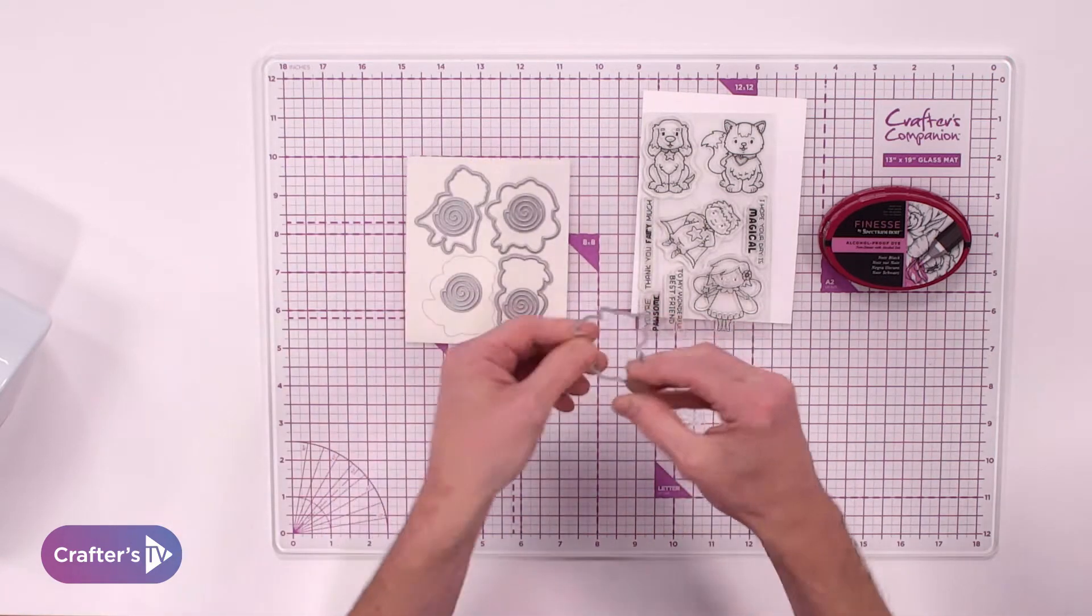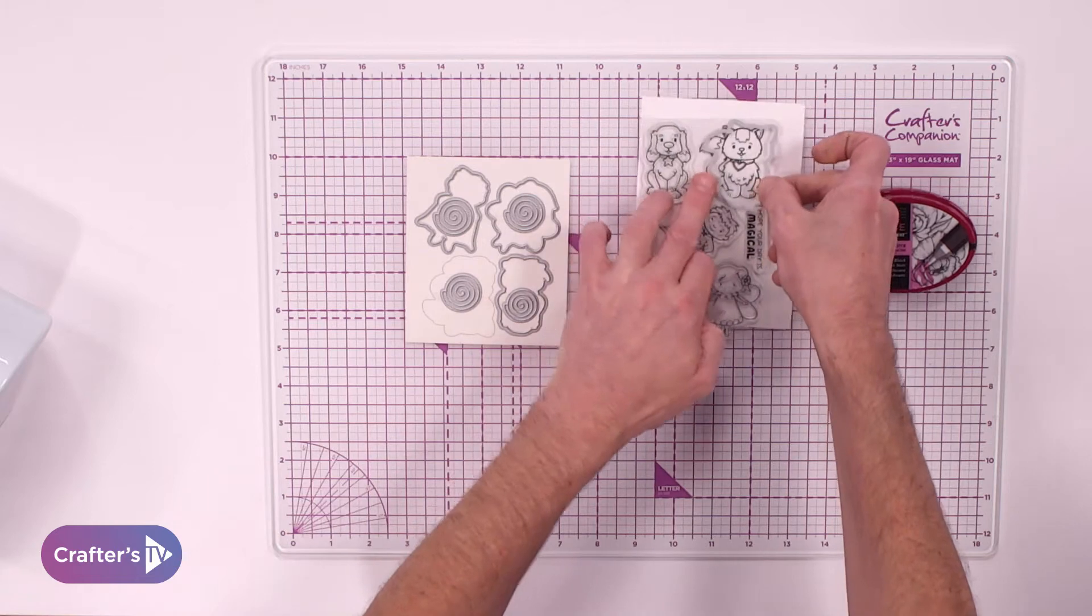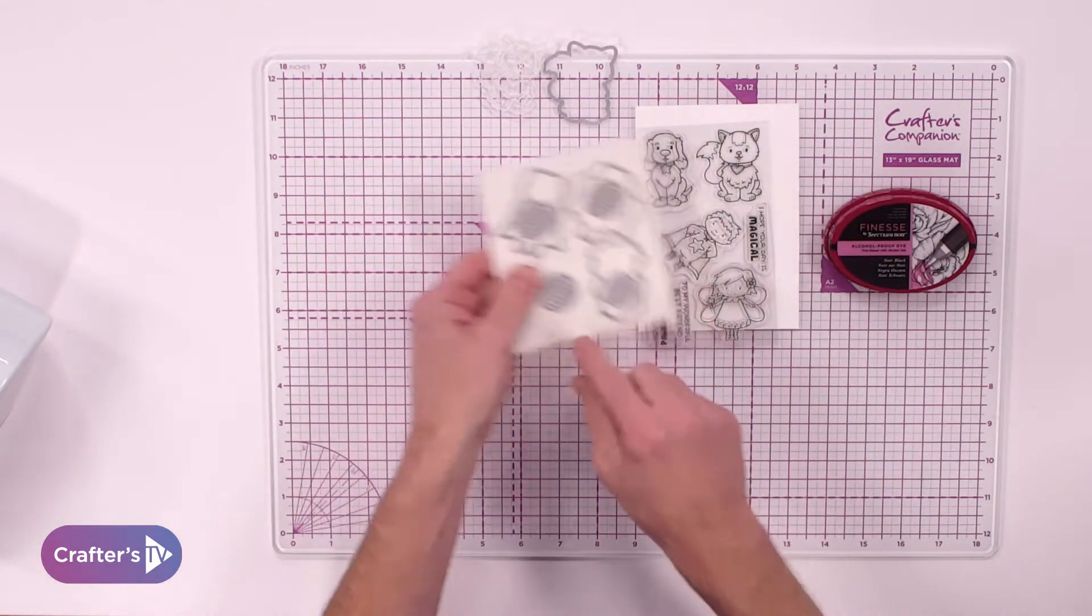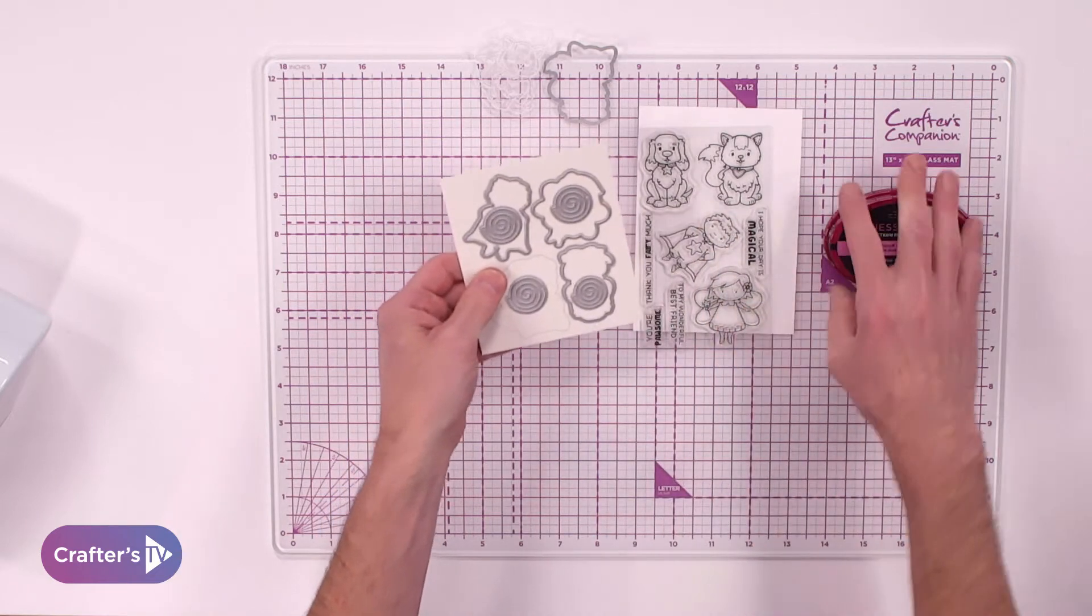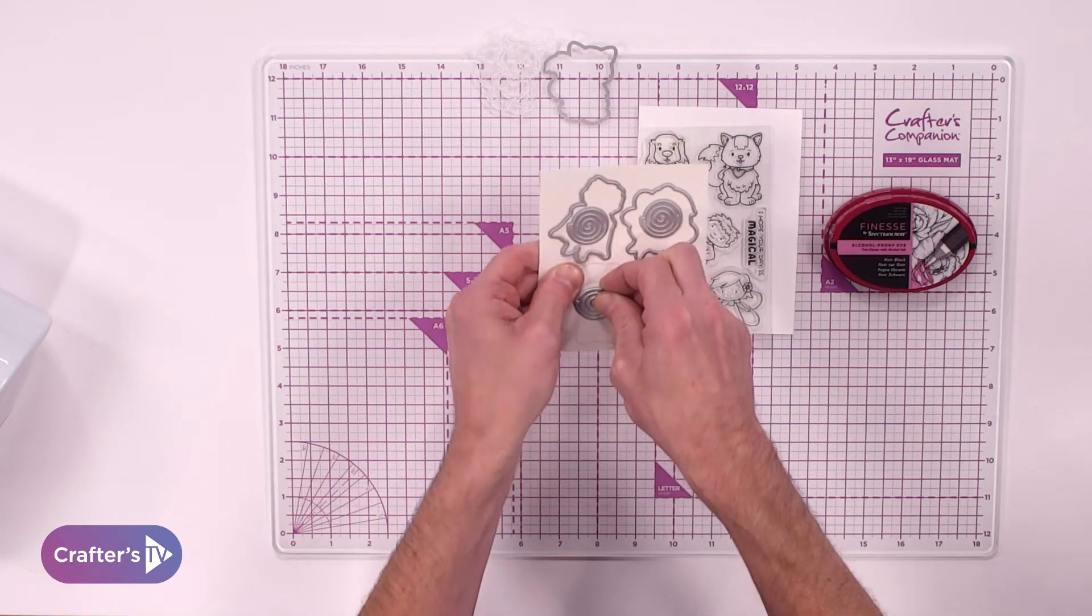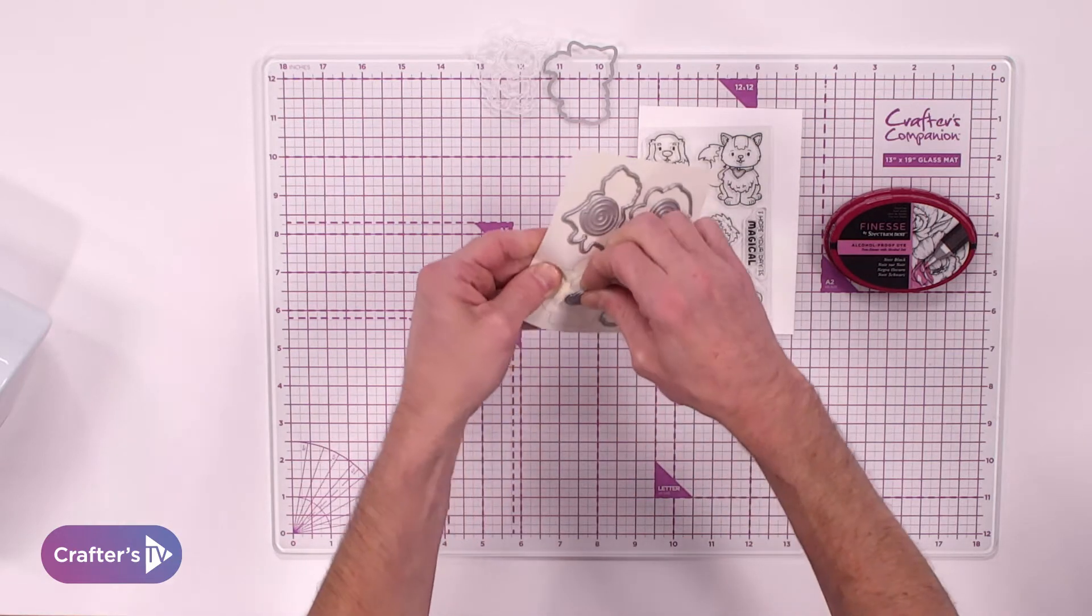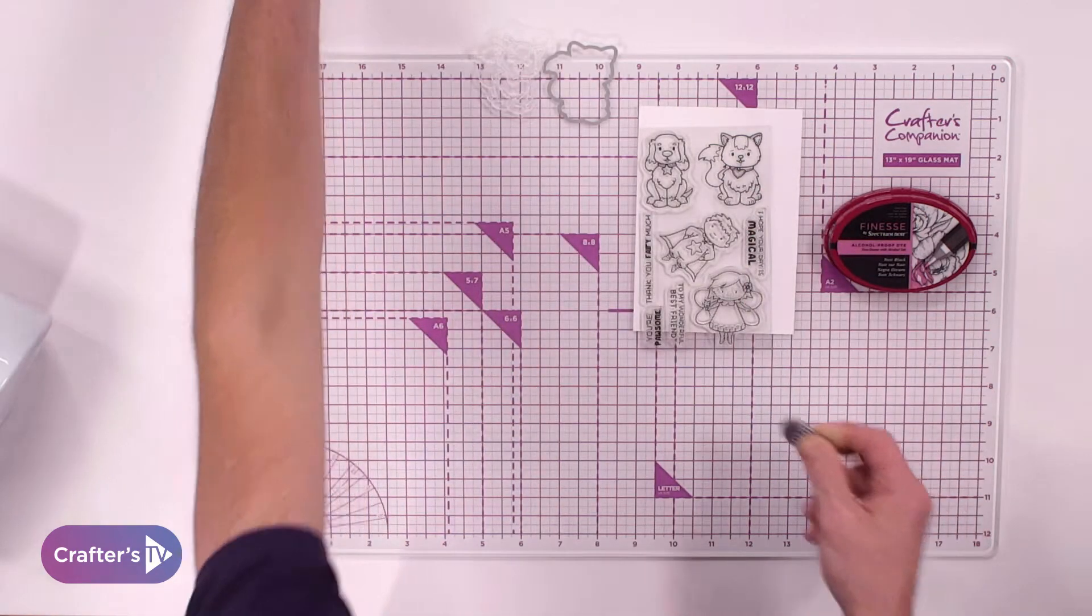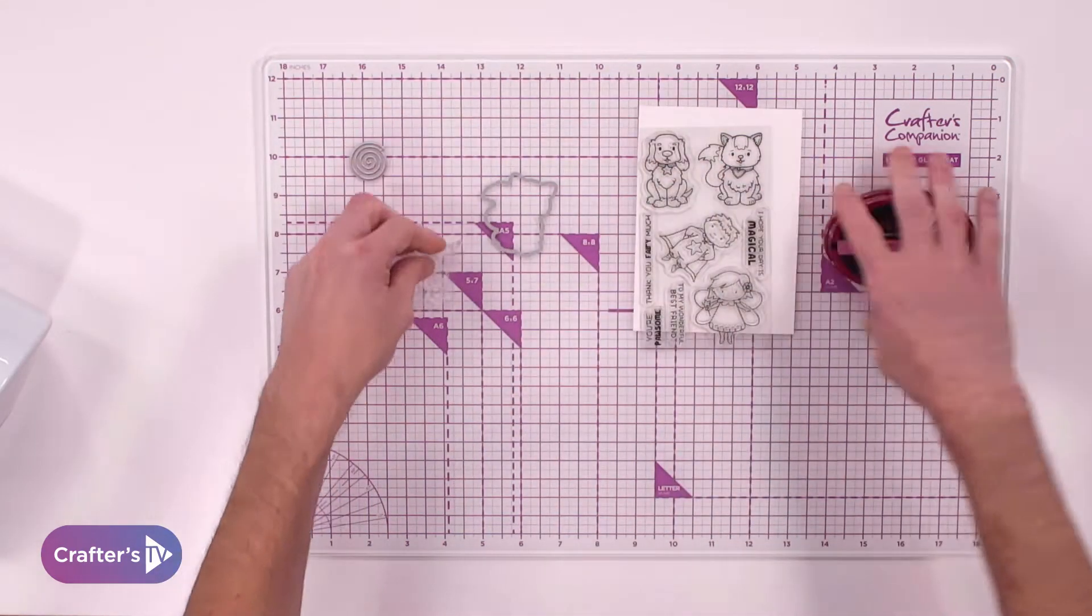Each of the images or the characters have all got their own corresponding die. So I know that this one is of the pussycat because it matches the outline. Because the shape of the character differs slightly, we've given you your own little spiral die for each of the characters.